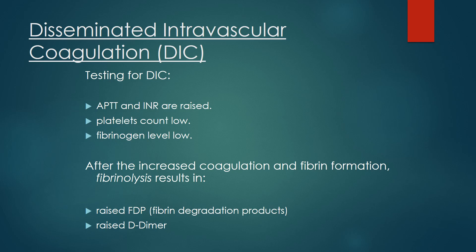Testing for DIC includes: aPTT, INR, platelet count (low), fibrinogen. After increased coagulation and fibrinolysis, results show elevated FDP and elevated D-dimer.